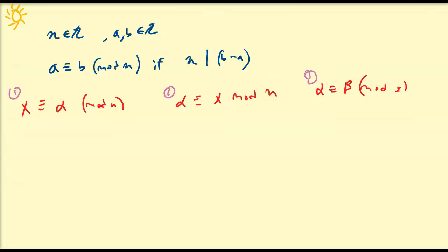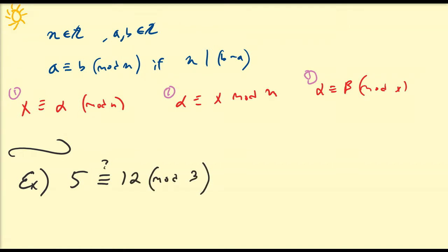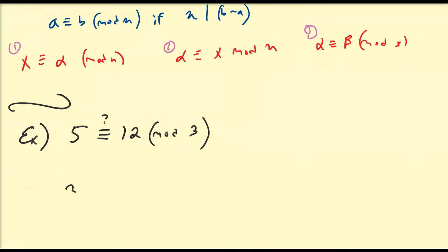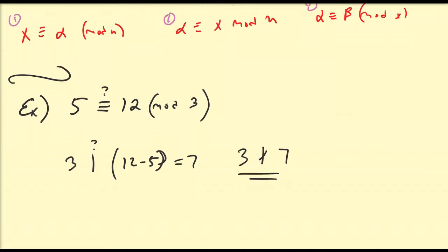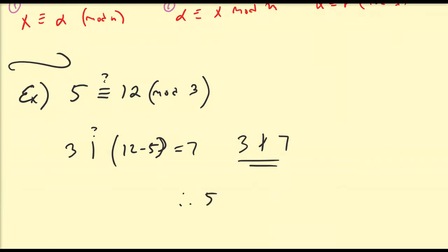Before we dive into our discussion of solving basic congruence equations, let's first do an example to illustrate how to verify that two numbers are congruent to one another. Is 5 congruent to 12 modulo 3? This is equivalent to asking: does 3 divide into 12 minus 5? So 12 minus 5 is equal to 7, and 3 does not divide into 7. So 5 is not congruent to 12 modulo 3.